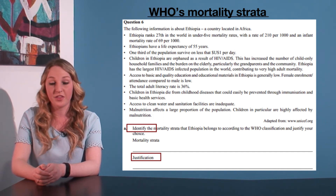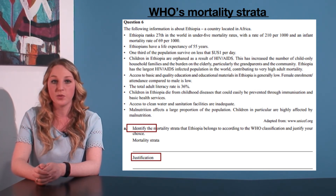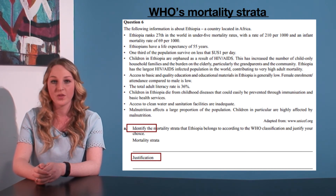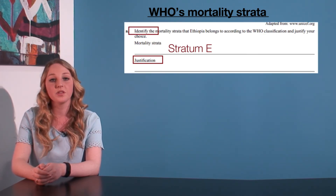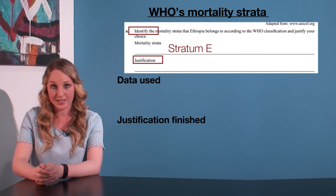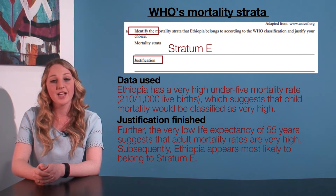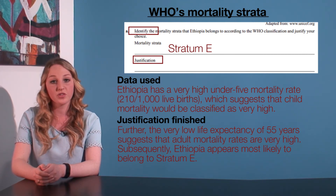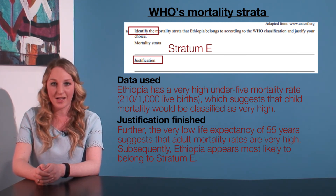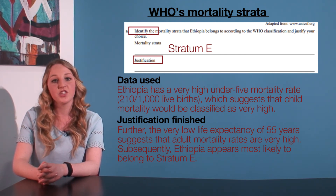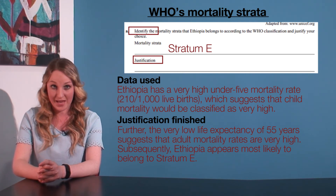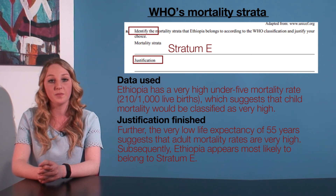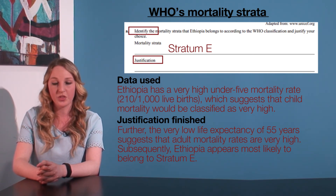Firstly, we need to identify the correct stratum. Remember that stratum A has the lowest mortality rates and stratum E has the highest, so we could simply say stratum E. But then comes the trickier part — we have to justify our response. In a response like this, we definitely need to use some of the given data. So we could say something like: Ethiopia has a very high infant mortality rate of 210 per thousand live births, which suggests that child mortality would be classified as very high. Further, the very low life expectancy of 55 years suggests that adult mortality rates are also very high. Subsequently, Ethiopia appears most likely to belong to stratum E. Note that stratum D could also be justified here, so long as you can back up your contention with the provided data.